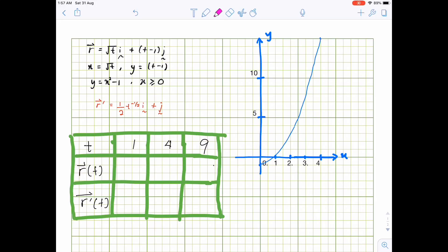For a specific example, let r equals square root t i plus (t minus 1) j. When we have the parametric equation, we will have this one, and then by eliminating the t, we have this quadratic equation.